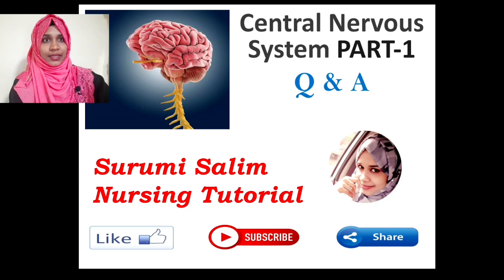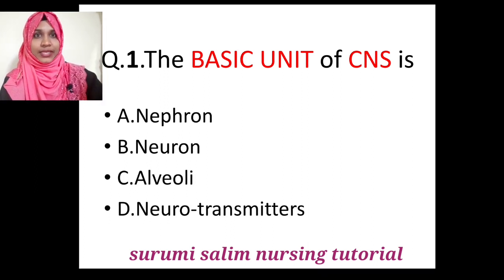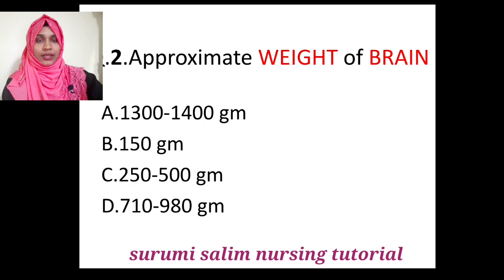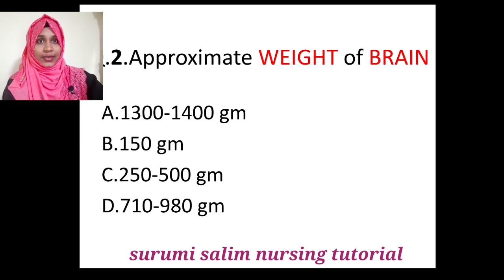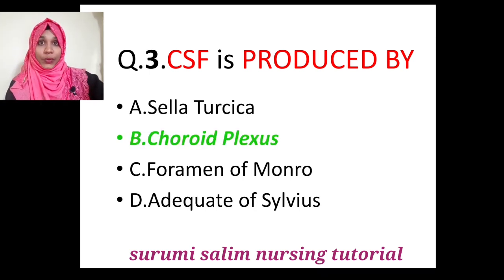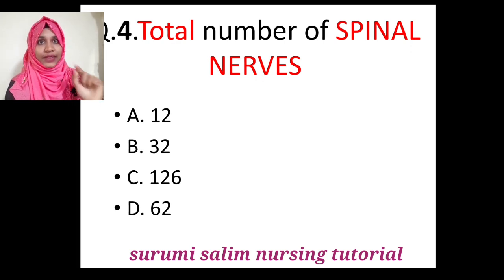Question 1: The basic unit of the central nervous system — options are nephron, neuron, alveoli, neurotransmitter. Answer: neuron. Question 2: Approximate weight of the brain — answer is 1300 to 1400 grams. Question 3: CSF is produced by the choroid plexus, particularly in the fourth ventricle. Question 4: Total number of spinal nerves — 62 in total, or 31 pairs.